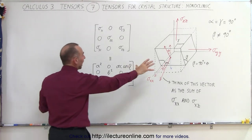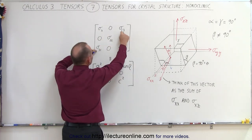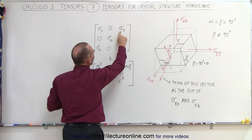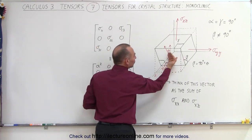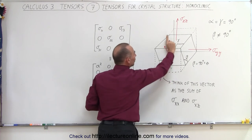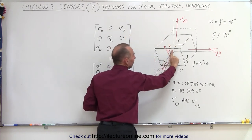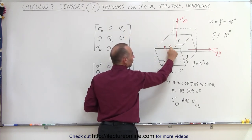And so we can now represent that in a tensor format by adding these two terms. Notice that sigma 1,3 is basically in the x direction plane pointing in the z direction right here, that's this dashed vector going up here.